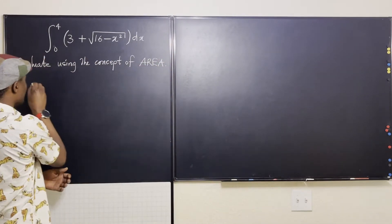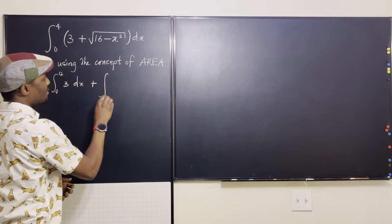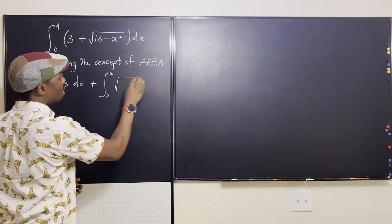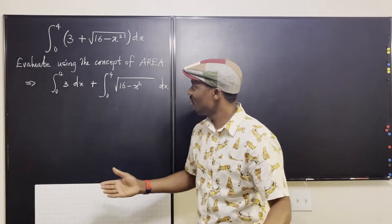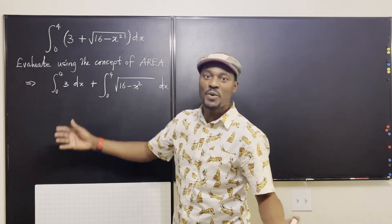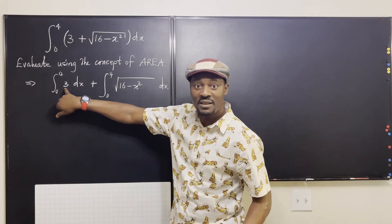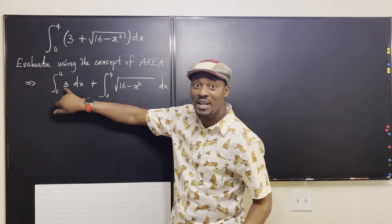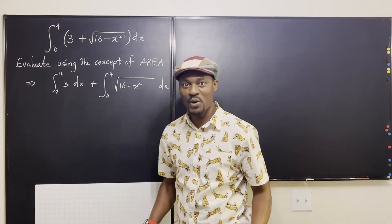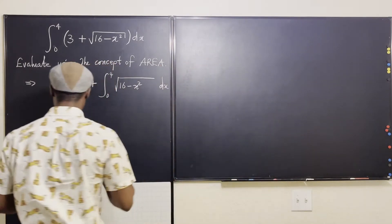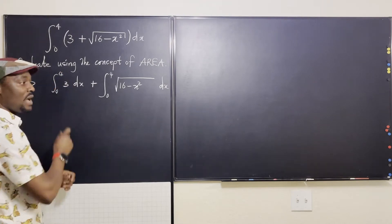This is the same thing as the integral from 0 to 4 of 3 dx, plus the integral from 0 to 4 of the square root of 16 minus x squared dx. This first integral is just telling you to integrate — what is the area bounded by the line y equals 3? The function is f(x) = 3, and it's between 0 and 4.